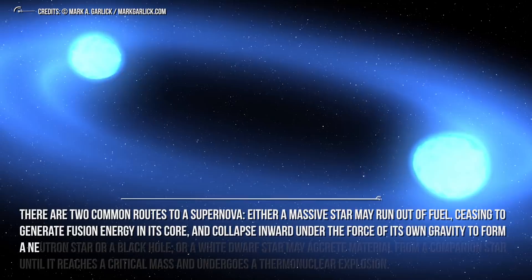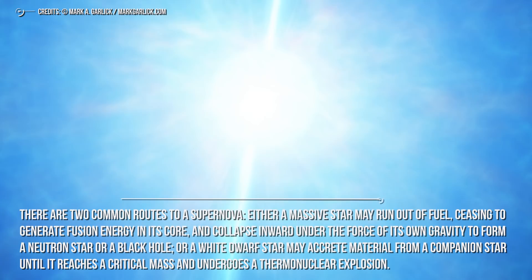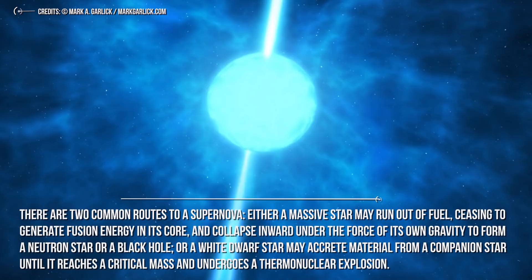Either a massive star may run out of fuel, ceasing to generate fusion energy in its core and collapse inward under the force of its own gravity to form a neutron star or a black hole, or a white dwarf star may accrete material from a companion star until it reaches a critical mass and undergoes a thermonuclear explosion.